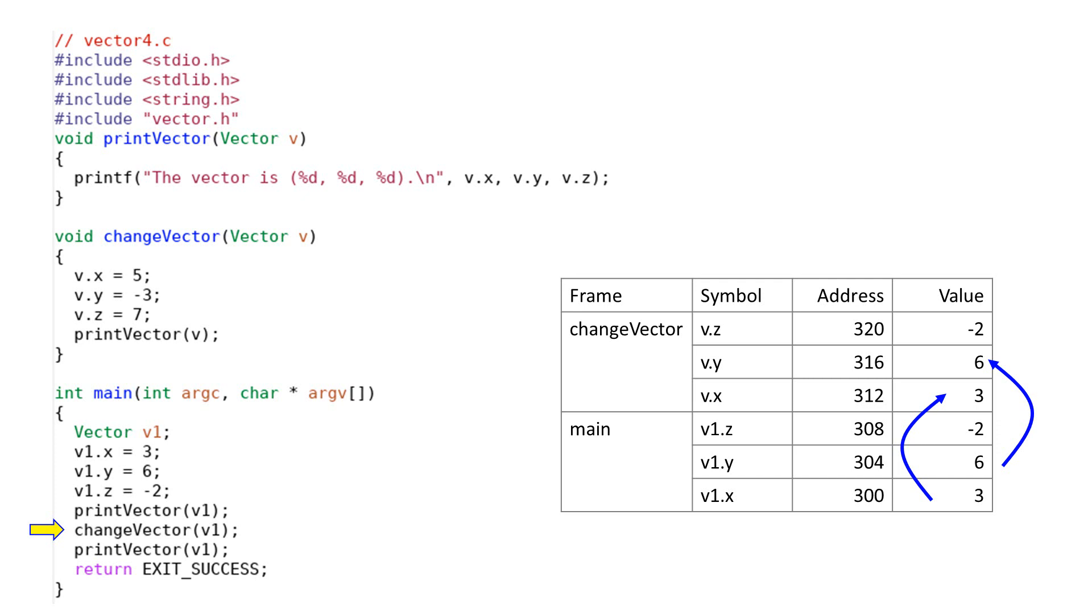In Java or Python, passing an object means passing by reference. Thus, the changes inside the function will be kept in the calling function when the called function finishes. In C++, you can choose to pass by reference. In that case, C++ is the same as Java or Python. C does not have the concept of passing by reference. Calling a function using an object means creating a new object on the stack memory.